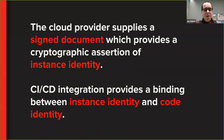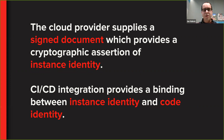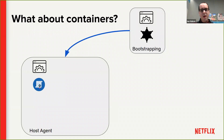To summarize: the cloud provider gives us a signed document providing a cryptographic assertion of instance identity, and our CI/CD integration provides a binding between instance identity and code identity. Code identity is what's really useful for us because it's the thing that has a meaningful name. Everything I just described is AWS EC2 specific, although it generalizes to running virtualized instances on most cloud providers. What about containers — what do we do for Kubernetes?